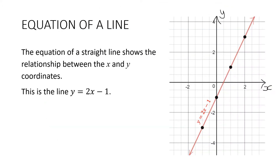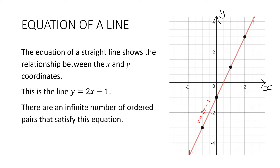We're going to start by looking at the equation of a line, but we're going to cover this in more detail in the next lesson. The equation of a straight line just shows the relationship between the x and y coordinates. And this is the line y equals 2x take away 1. A line is actually made up of an infinite number of ordered pairs that satisfy the equation.